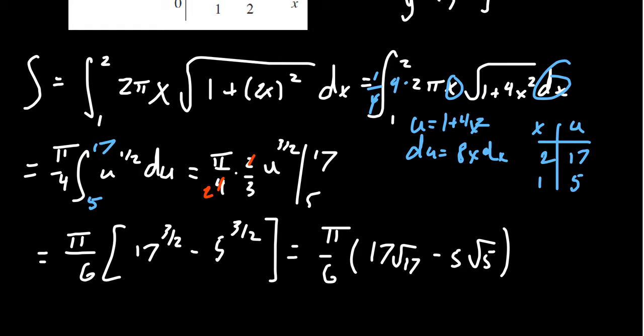So we get something like π/6 times 17 root 17 minus 5 root 5. No other simplifications we can use in this situation. We can approximate this if we want to, but we keep it as an exact answer right here. We can see that calculating surface area generally is much easier than arc length, even though it involves the arc length formula. Because like we saw in this example, u substitution or other techniques of integration come into play that can dramatically simplify the calculation.